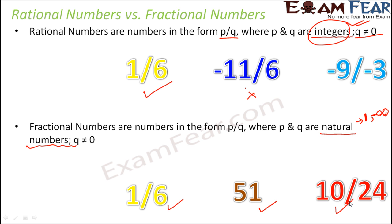So now we are clear why we have something called rational numbers when we already had fractional numbers in place.